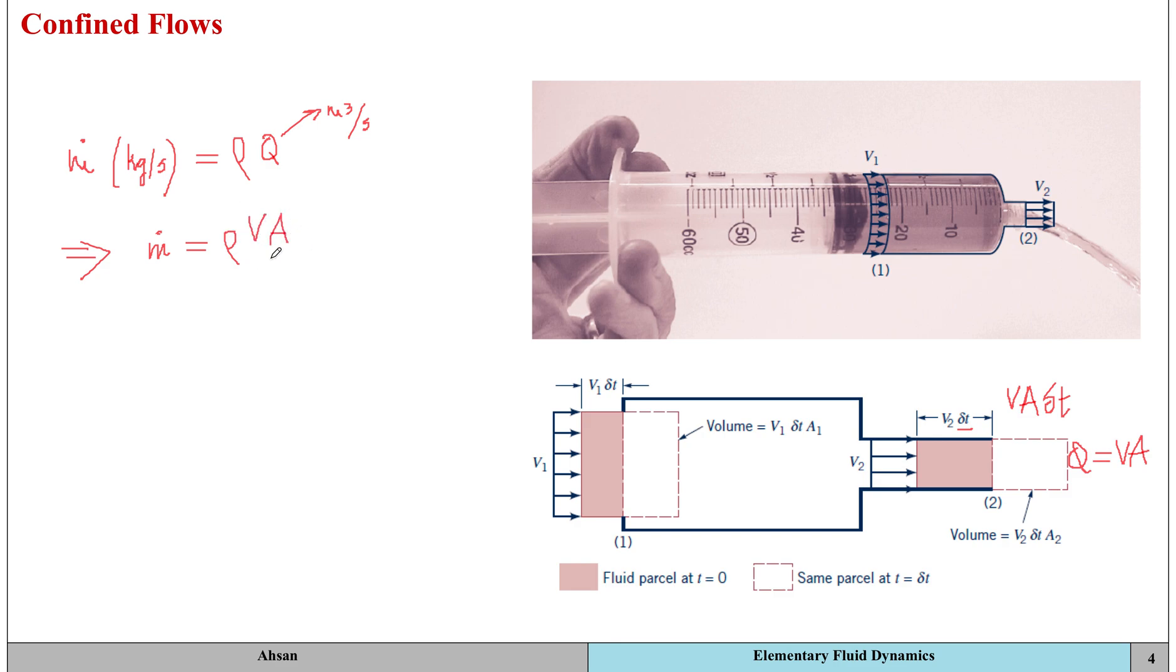Now for mass to remain conserved, the inflow rate should be equal to the outflow rate. Designating inflow as section 1 and outflow as section 2, that means m dot 1 should be equal to m dot 2, and rho 1 A1 v1 should be equal to rho 2 A2 v2.